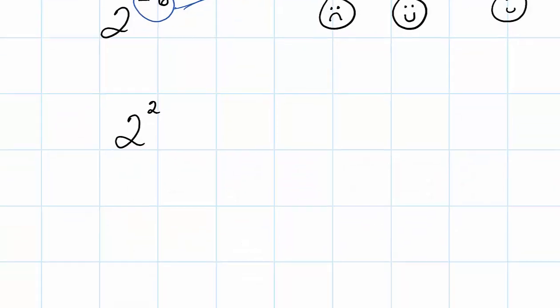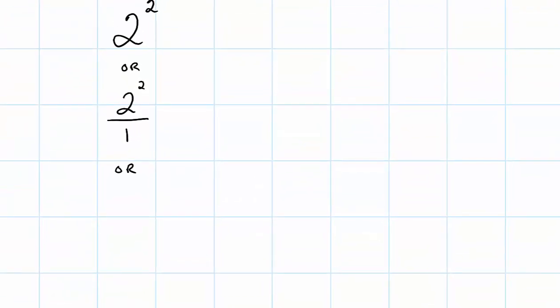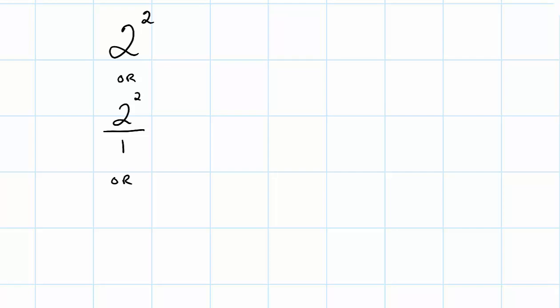How else can that look though? 2 to the positive 2nd power. Well, one of the ways that we could take a look at it is it could be a fraction. So we could have 2 to the 2nd power written over 1. We could also take the reciprocal of that. So another way is if we flip it, I get 1 over 2 and my exponent changes to the opposite.